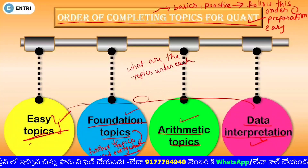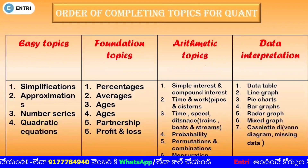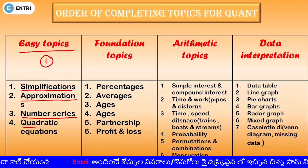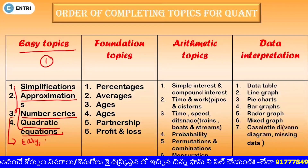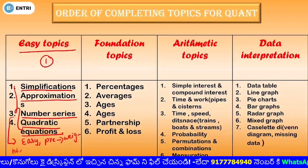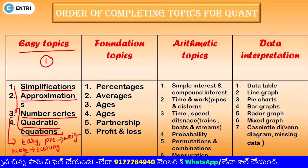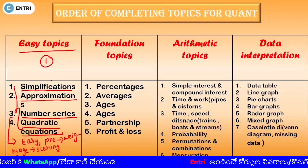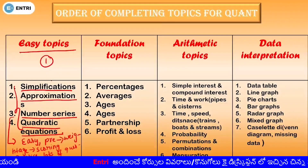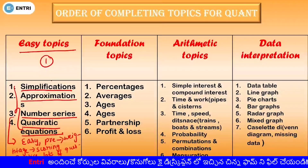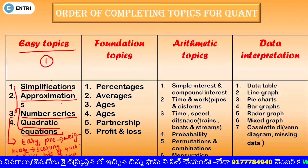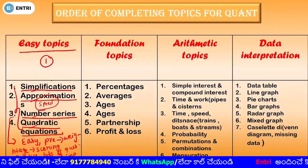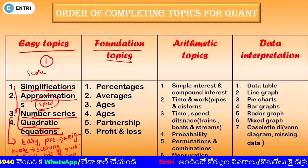So we will choose the order of completing topics. In each category, we will check the order of completing topics. First, under easy topics like simplifications, approximations, number series, and quadratic equations — we will solve these four topics in the Quant section. These are pre-exam low weightage but scoring topics. So first, complete these four topics: solve the basics, techniques, etc. You need to practice these questions to maintain speed. If you complete these basic topics, you need to make easy scores.